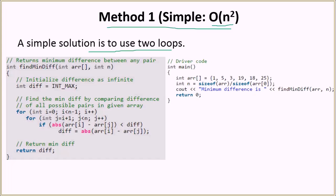The simple solution uses two loops. Let's look at the driver function first. Inside the driver function we have the input array, we calculate its size by dividing the size of the array by the size of the first element — giving us n, which is 6 in this case. We then call the findMinDifference function passing the array and its size.